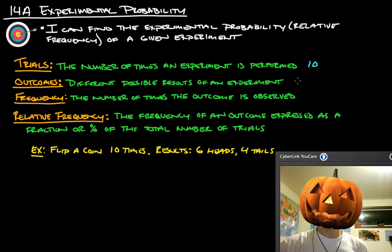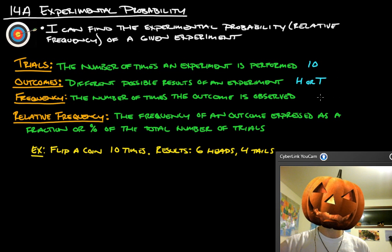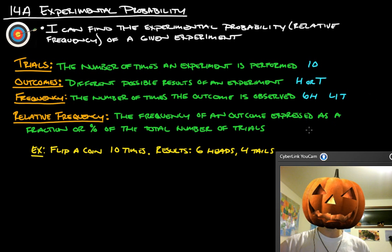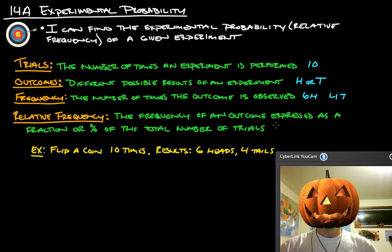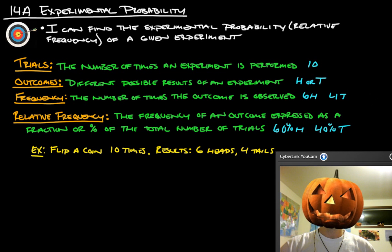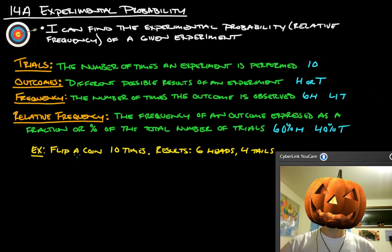Different possible results of the experiment are the outcomes, that would be heads or tails. Frequency, the number of times the outcome is observed, so you could say six heads and four tails. And then the frequency expressed as a fraction or percent would be sixty percent heads and forty percent tails. So that's what all of those mean.